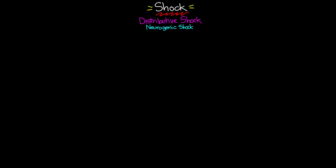For this lesson, we're going to take a look at neurogenic shock — another type of shock classified as a distributive shock. We're going to break down the word into its root words: we have 'neuro' and 'genic.' Neuro has to do with the brain and spinal cord, and genic meaning originating from.